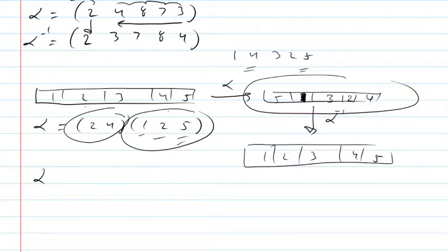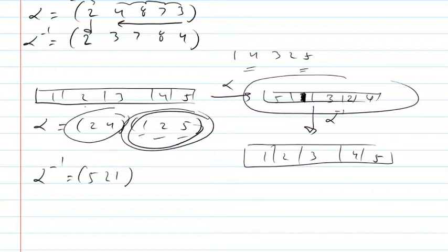So what the inverse has to be is I would have to do the thing I did last, first — I'd have to do the inverse of (1, 2, 5), which I'll write as (5, 2, 1) — and then I would undo the 2-cycle.